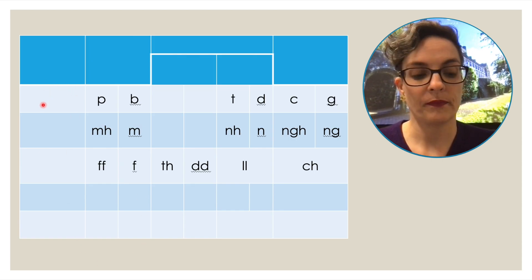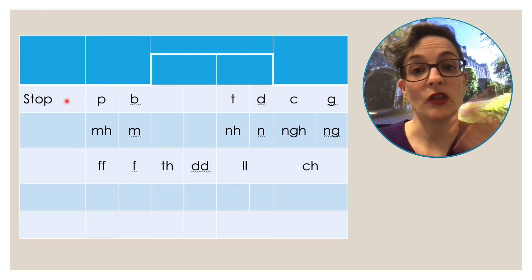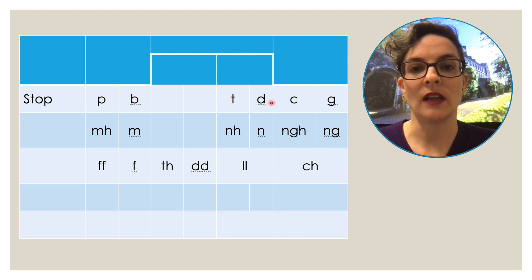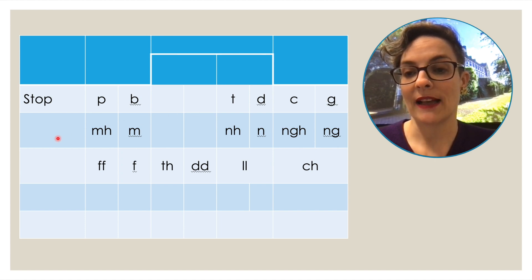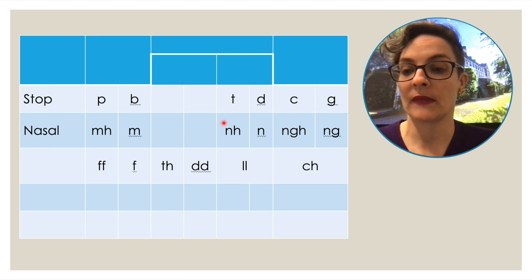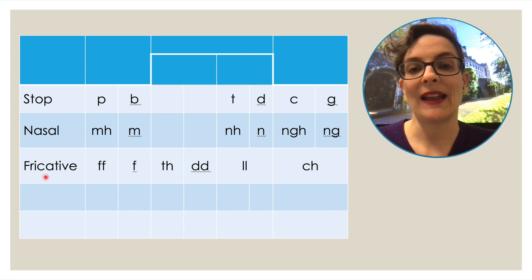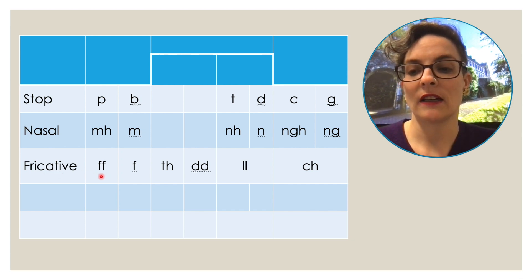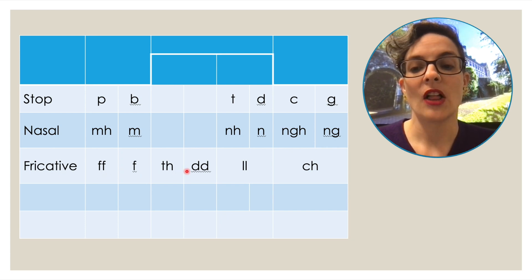We'll put these into our chart. We call P, T, K, B, D, G 'stops' because the air is stopped completely. If you say all these letters you can feel how they are similar — they all stop the airflow in some way. The next line in the chart is called nasal sounds because the air is coming out of your nose — so that also makes sense. These next ones are called fricatives, and if you think about that air, it's kind of bumpy, like friction — it's being forced out.